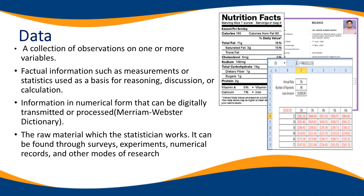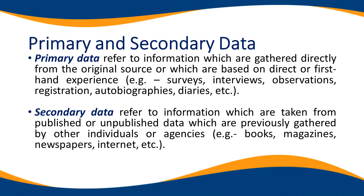The primary element of data management is called the data. Data is a collection of observations on one or more variables. It is also factual information such as measurements or statistics used as a basis for reasoning, discussion, or calculation. Data is information in numerical form that can be digitally transmitted or processed. It is the raw material with which the statistician works, and can be found through surveys, experiments, numerical records, and other modes of research.